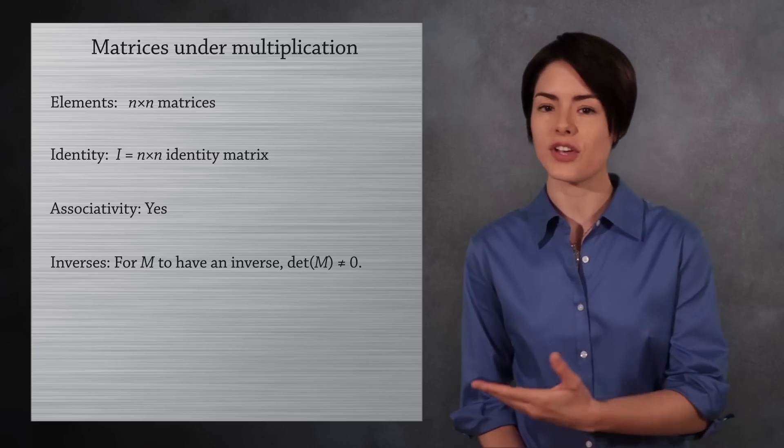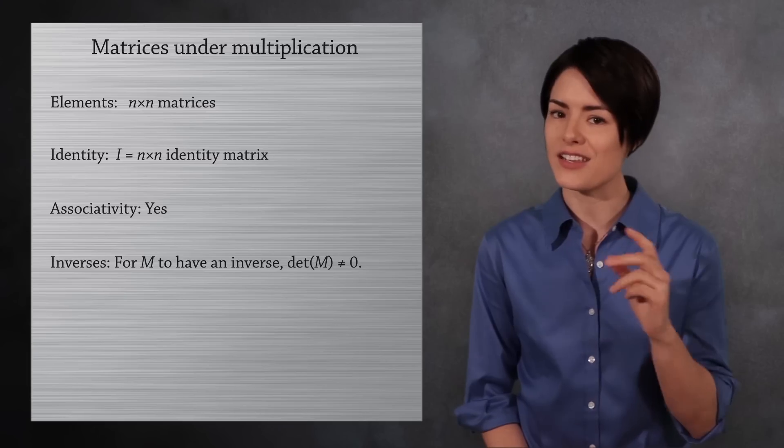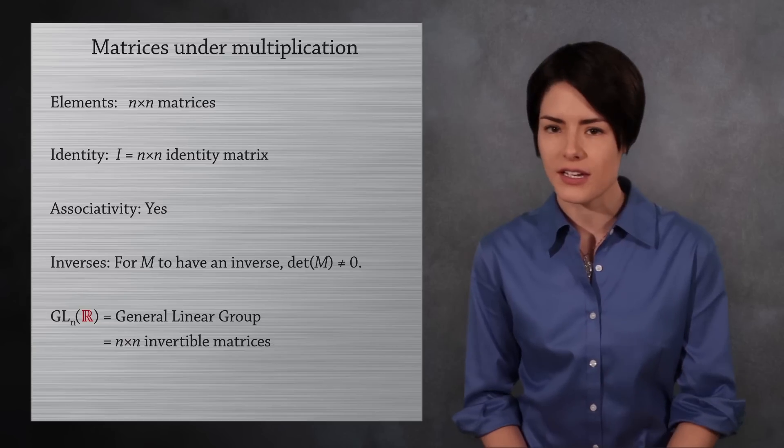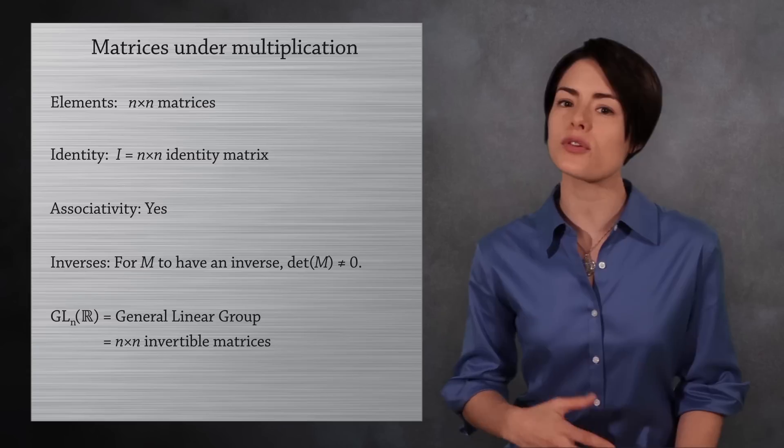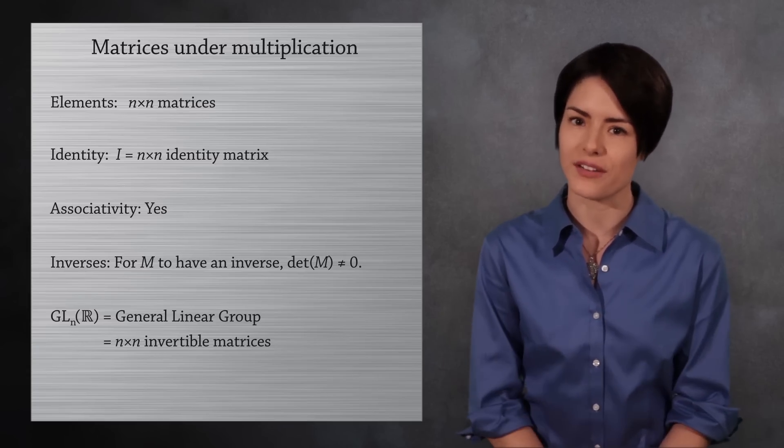It's called the general linear group, the group of invertible matrices, and is written like this. The r lets us know the matrix entries are real numbers, and the n tells us the size of the matrices. If we skip the trivial case of 1 by 1 matrices, then the general linear group is non-commutative.